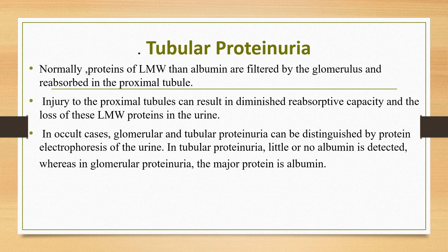Regarding tubular proteinuria, a variety of renal disorders primarily involving the tubular interstitial compartment of the kidney can cause low-grade fixed proteinuria, with a urine protein to creatinine ratio between 0.2 and 1. In a healthy state, large amounts of low molecular weight proteins are filtered by the glomerulus and reabsorbed in the proximal tubule. Injury to the proximal tubule results in diminished reabsorptive capacity and loss of those low molecular weight proteins in the urine. Tubular proteinuria may be seen in acquired and inherited disorders, and may be associated with other defects of proximal tubular function such as Fanconi syndrome, characterized by glycosuria, phosphaturia, bicarbonate wasting, and aminoaciduria.